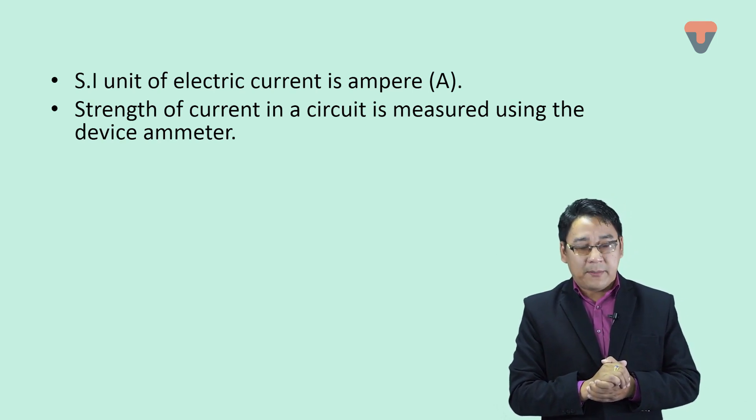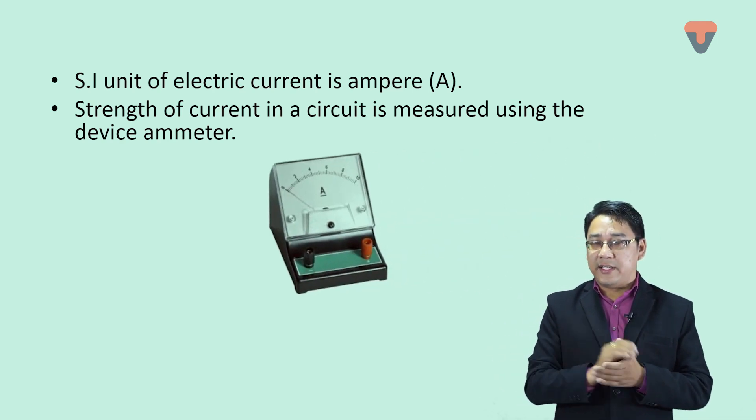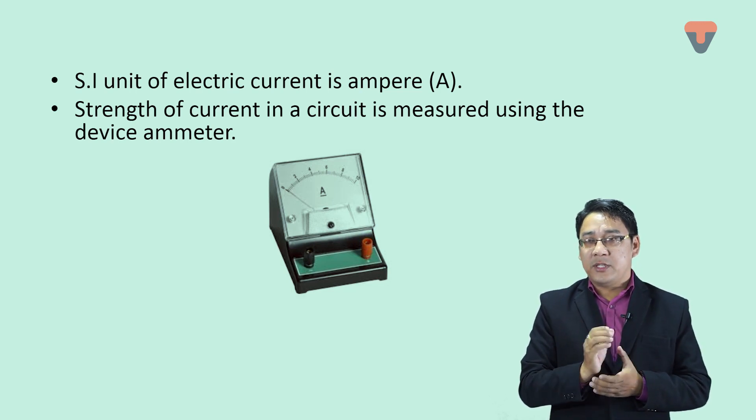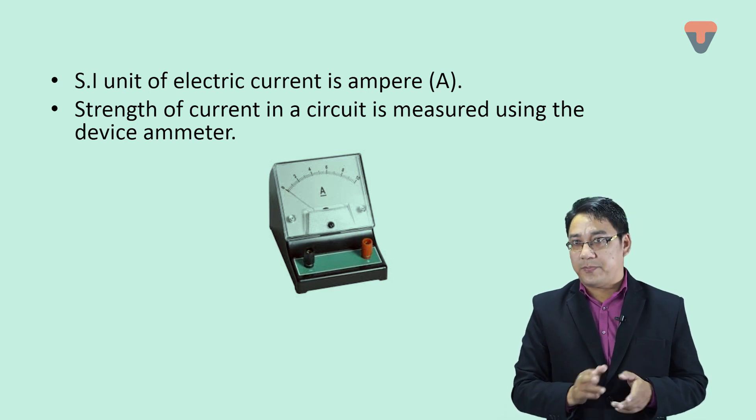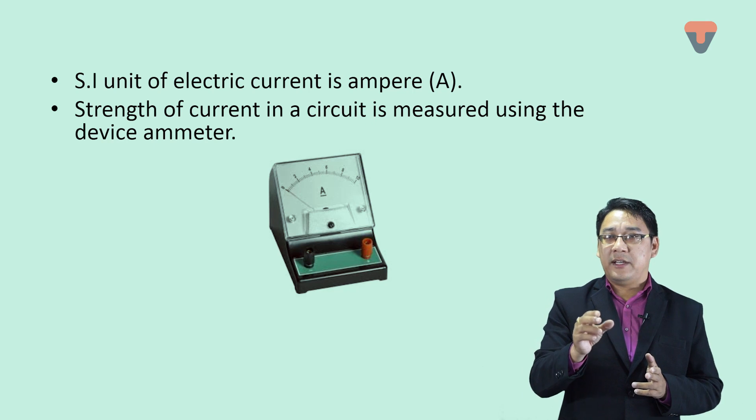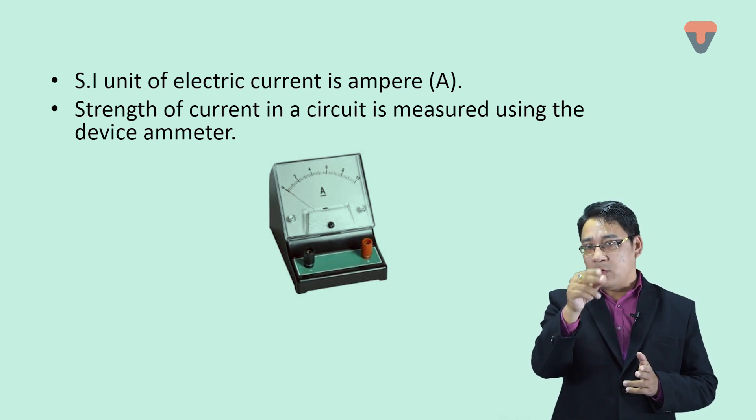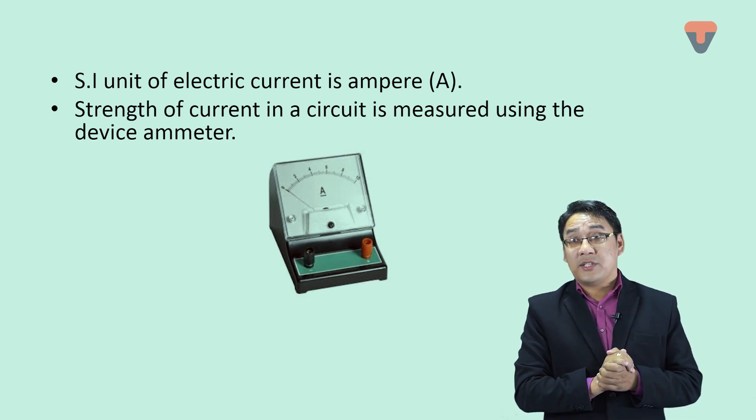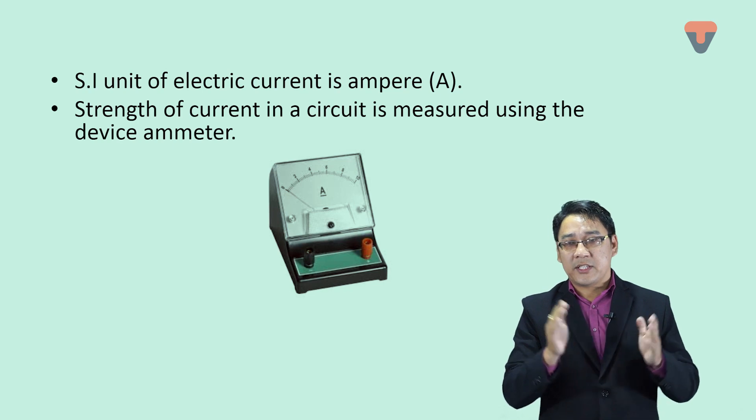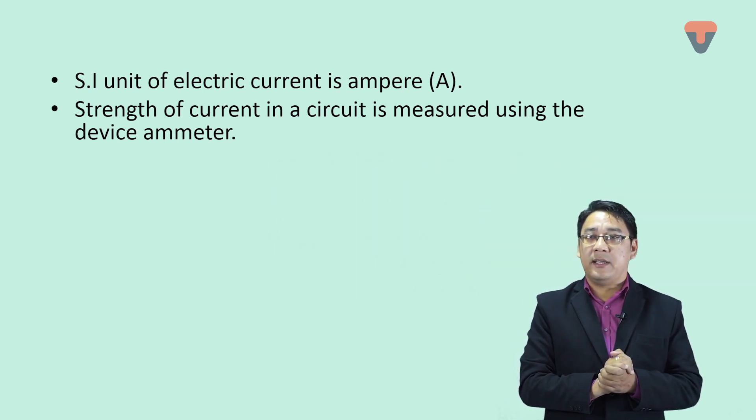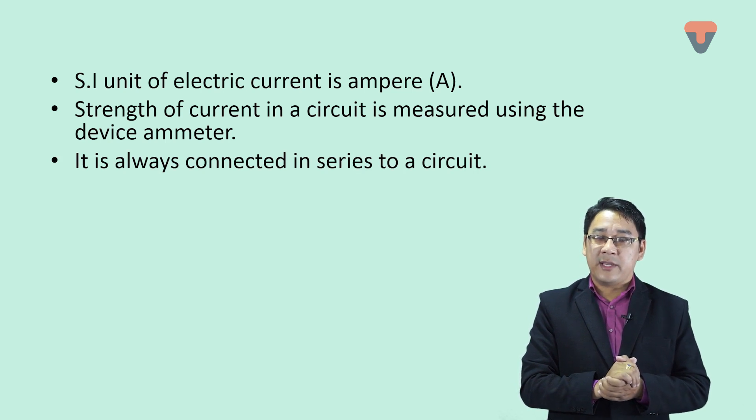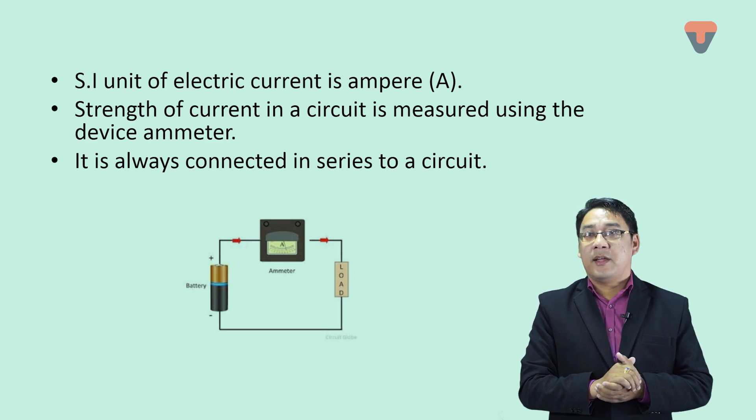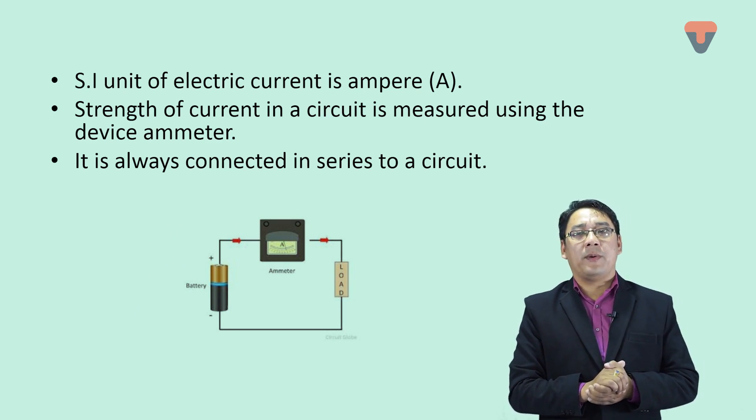Ammeter is a device used to measure the strength of electric current. It is made using materials having low value of resistance. This ammeter is always connected in series.